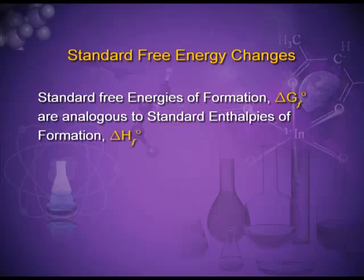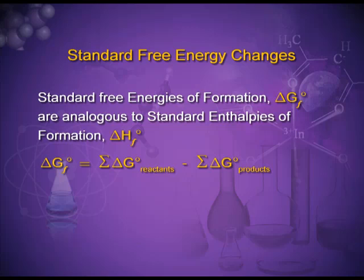Standard free energy changes: standard free energies of formation, delta G naught F, are analogous to standard enthalpies of formation, delta H naught F. Delta G naught F can be calculated as the total free energy of the products minus the total free energy of the reactants. We can also find delta G by knowing the values of delta H and delta S — we put the numerical values with their signs, accounting for the decrease or increase in enthalpy or entropy.